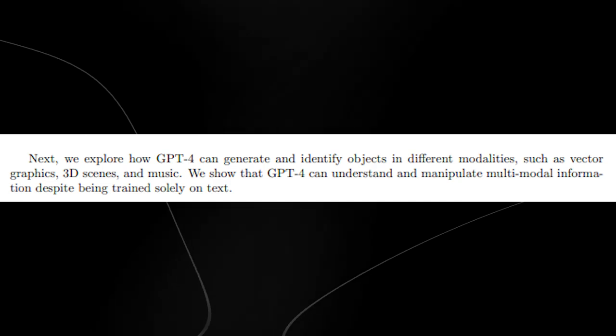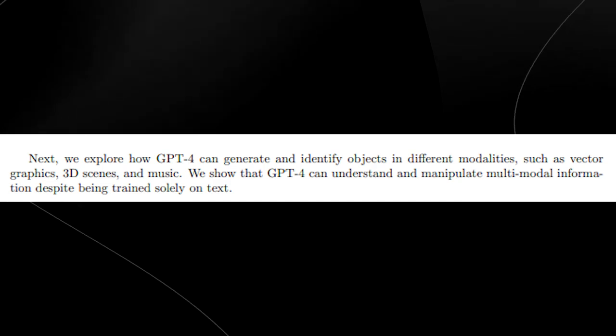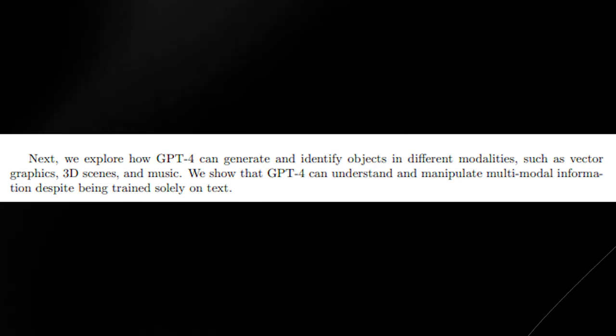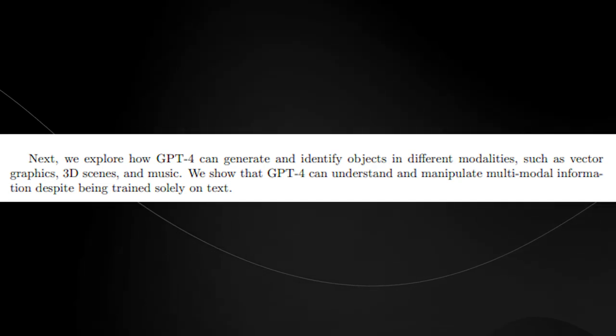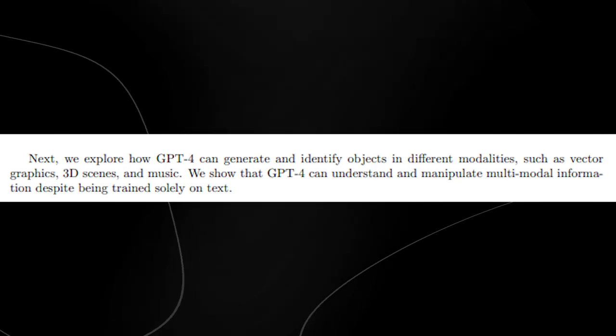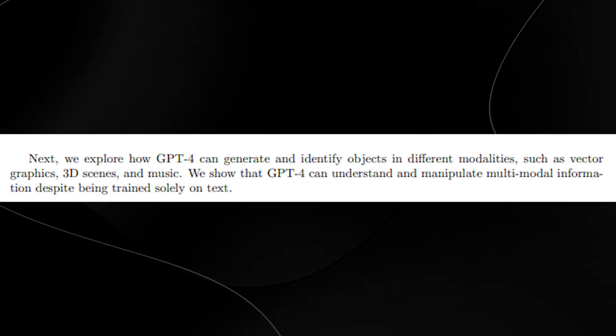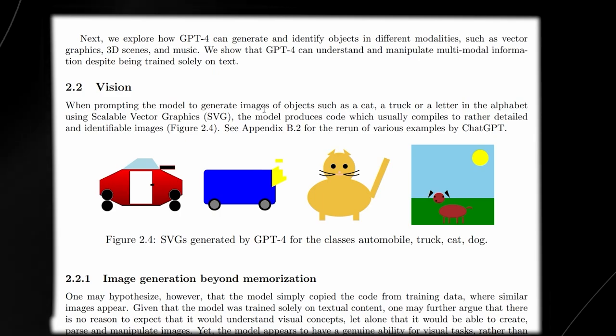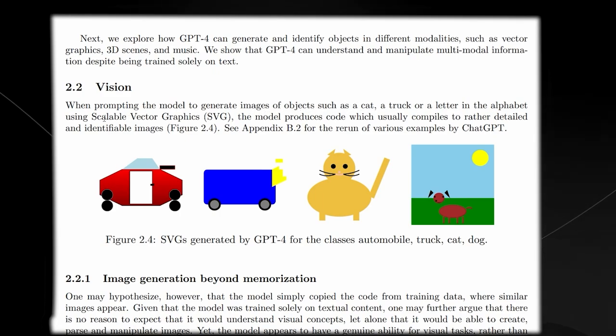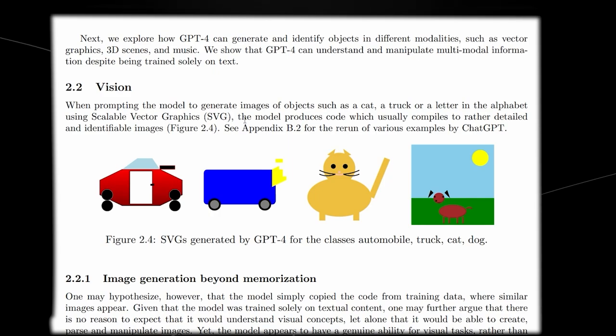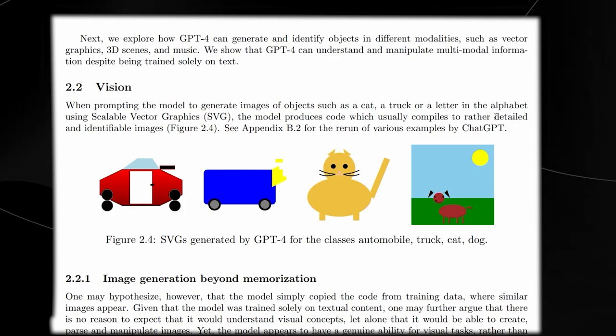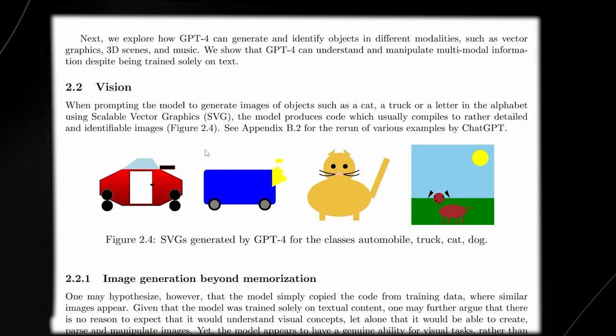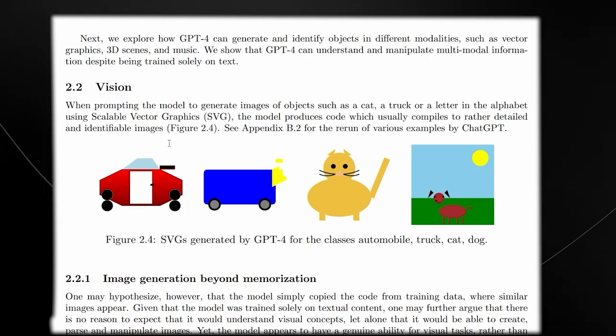Something that is pretty insane is the fact that they explore how GPT-4 can identify objects in different modalities, such as vector graphics, 3D scenes, and music. What they show is that GPT-4 can actually understand multimodal information despite only being trained on text. I think that's absolutely incredible. When prompting the model to generate images of objects such as a cat, a truck, or a letter in the alphabet using scalable vector graphics, the model produces code which usually compiles to rather detailed and identifiable images.